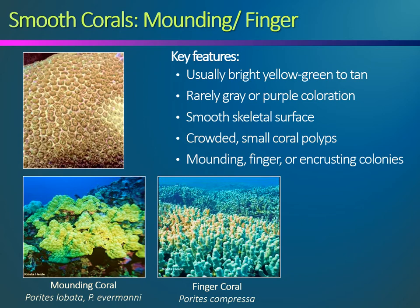Smooth corals are the most common type of coral in the Hawaiian Islands. Included in this category are smooth mounding corals, smooth finger corals, and smooth plate and pillar corals. The key feature of both smooth mounding and smooth finger corals is that when viewed up close, they have a very even or smooth surface without any obvious skeletal bumps or protrusions. Coral polyps are tightly assembled along the smooth surface of the mounding colony. Smooth coral colonies are usually bright yellow-green to tan in color, but can also be gray or purple in rare cases. Smooth mounding corals can grow up to 20 feet in diameter. While the typical morphology is either large bumpy mounds or finger-shaped fields, small colonies of both varieties can also be encrusting on the reef substrate.